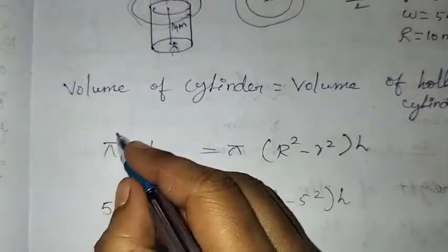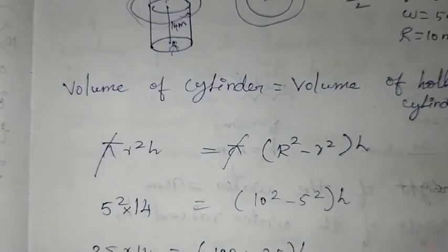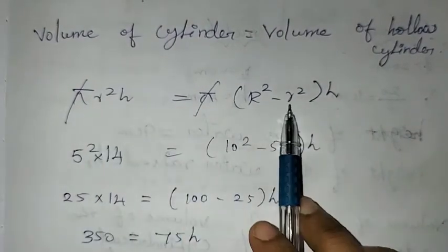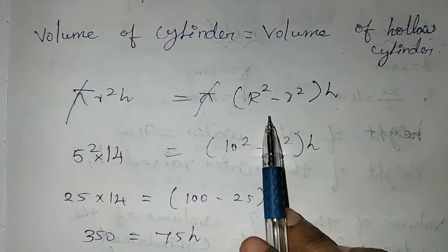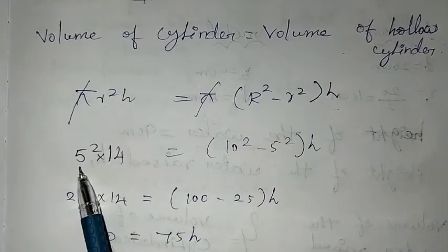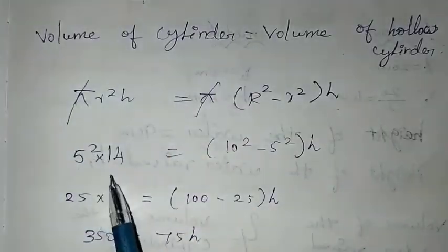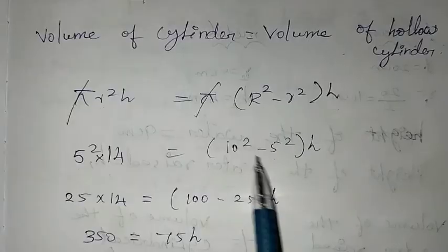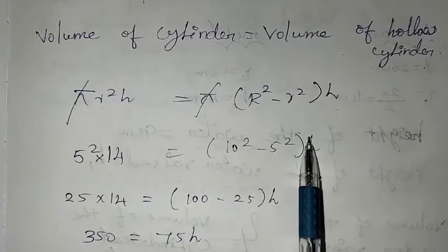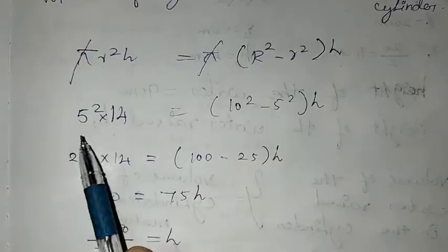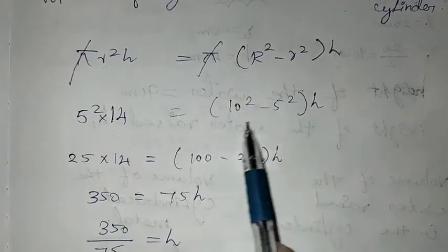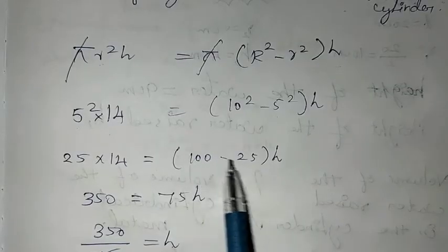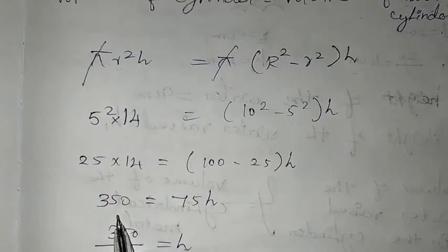Now substituting the values: small r is 5, the cylinder height is 14. So we get 5² × 14 = (10² − 5²) × H. That gives 25 × 14 = (100 − 25) × H. Subtracting: 75 × H = 350. So H = 350 divided by 75.